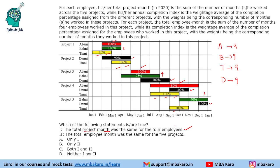The second statement says the total employee month was the same for all 5 projects. However, Project 1 has employee month 6 and Project 2 has employee month 5. Within the first two projects alone it is already different, so the second statement is false. Only the first statement is true — and it was an easy question; no weighted average was needed.